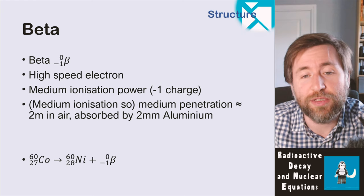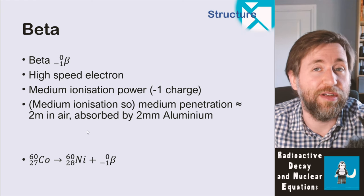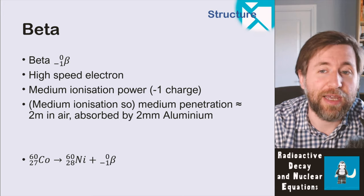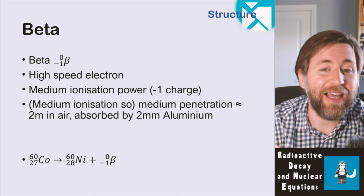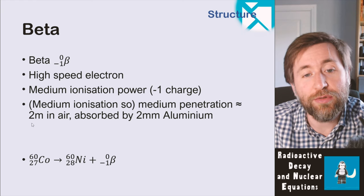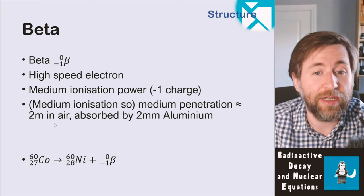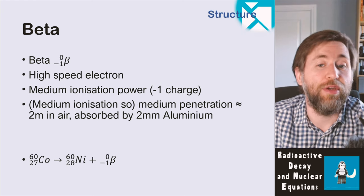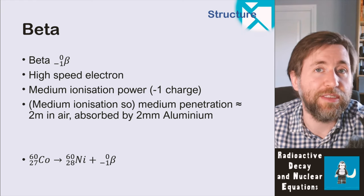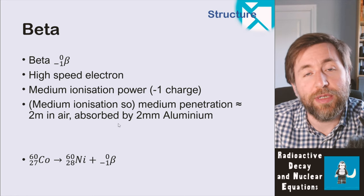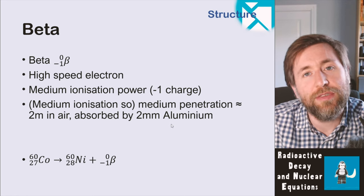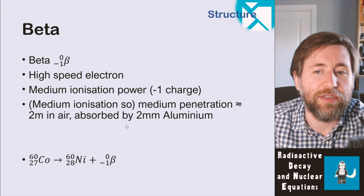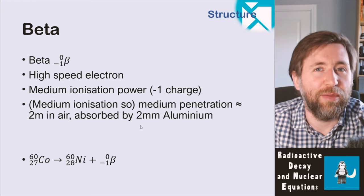Because it has medium ionizing power, beta also has medium penetration — it sits between alpha and gamma in terms of both penetration and ionization. It will travel two meters in air, so staying over two meters away makes it very unlikely to hit you. It will also be absorbed by two millimeters of aluminum, so you can shield yourself quite easily using aluminum or other metal plates.